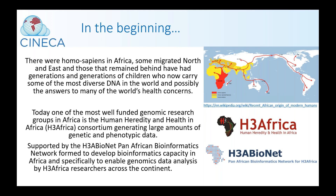Today, one of the most well-funded genomic research groups in Africa is the Human Hereditary and Health in Africa Consortium, H3Africa, generating large amounts of genetic and phenotypic data. The H3Africa Consortium has received about 170 million US dollars in funding from the NIH and Wellcome Trust. It has approximately 500 members, supports 51 projects that have recruited 54,000 participants to date across 34 African countries. It is supported by the H3A Bionet Pan-African Bioinformatics Network, which comprises 28 nodes based in 17 countries — 16 in Africa and one in the USA.